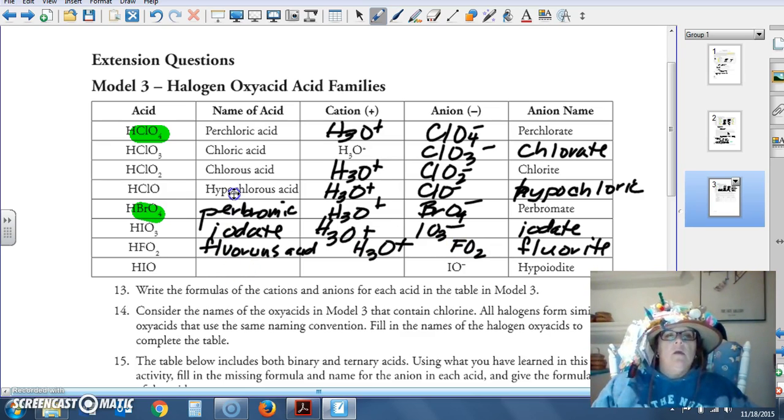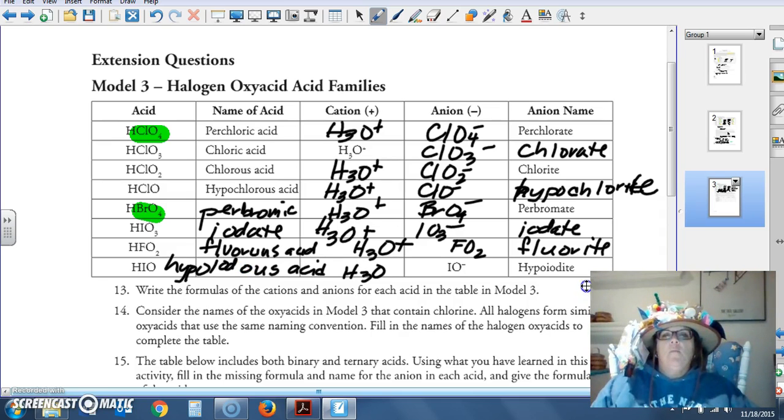And what do you suppose IO is going to be? Well, hypochlorous would be for hypochloric, chlorate, this should be ite, hypoiodous acid, hypoiodite.